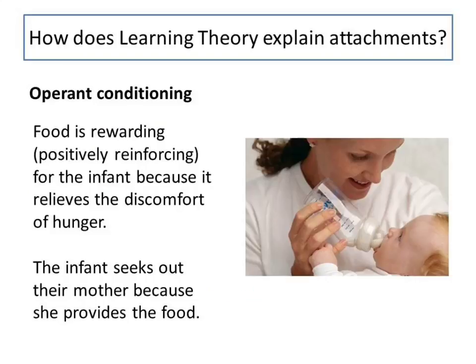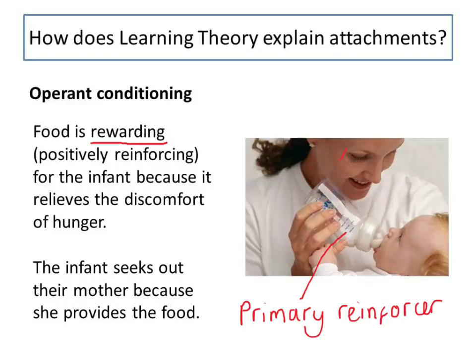In 1950, Dollard and Miller proposed that attachments can be learned through operant conditioning. Food is rewarding for the infant because it relieves the discomfort of hunger. The infant seeks out their mother because she provides the food. The food is the primary reinforcer and the mother is the secondary reinforcer.